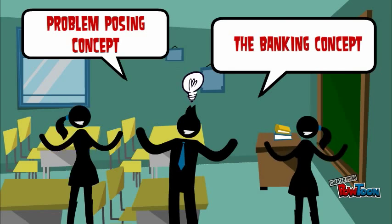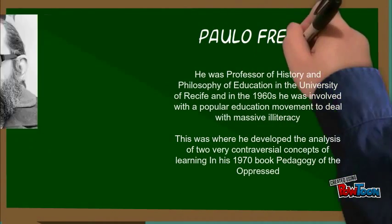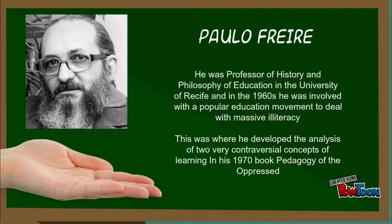Paulo Freire was a professor of history and philosophy of education at the University of Recife, and in 1960 he was involved with the popular education movement to deal with massive illiteracy. This was where he developed the analysis of these two very controversial concepts in his 1970 book, Pedagogy of the Oppressed.